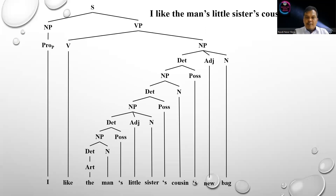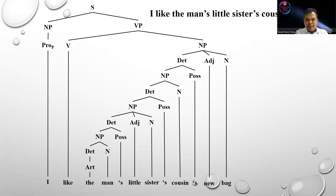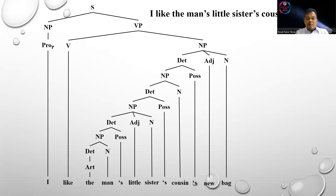We focus on the core of the NP, which is 'bag.' All of 'the man's little sister's cousin's new' are pre-modifiers of 'bag' — they are called pre-modifiers because they appear before the core. The NP as constituent of the determiner can also be composed of determiner plus adjective plus noun.